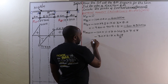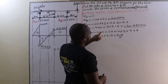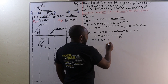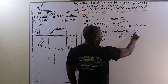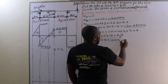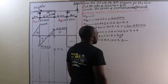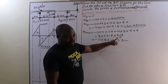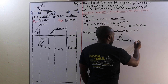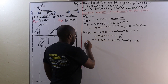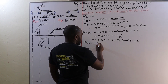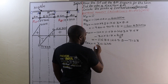Calculating: negative 100 times 11.68 equals negative 1168, plus 165.3 times 7.68 equals 1269.5, minus 30 times 2.18 times (2.18 divided by 2) equals 71.28. This gives us a maximum bending moment of 30.2 kilo-Newton-meters.